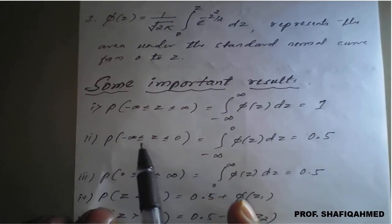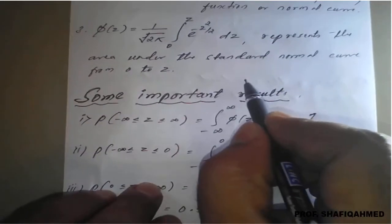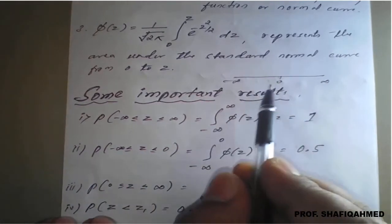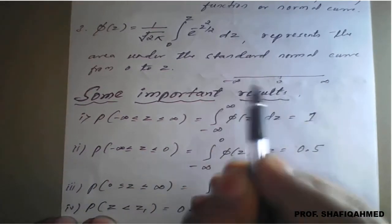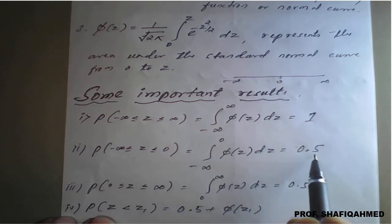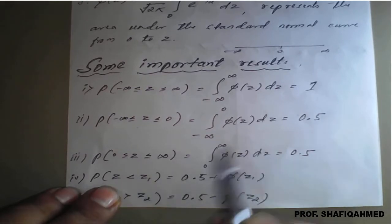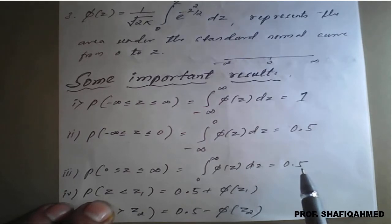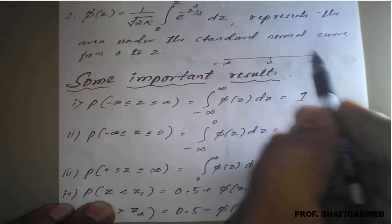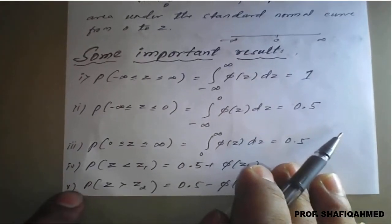The second result: P of z, where minus infinity is less than or equal to z less than or equal to 0 — this is from minus infinity to 0 and the result is 0.5. Similarly, z greater than or equal to 0 but less than or equal to infinity is the right-hand side, again 0.5. The complete area is 1, but 0 to minus infinity is 0.5 and 0 to plus infinity is also 0.5.